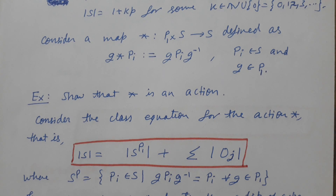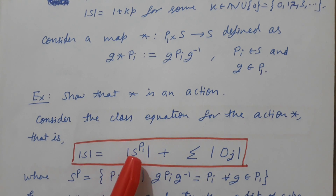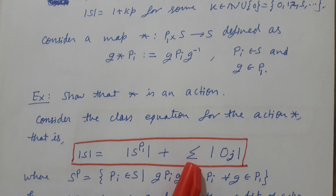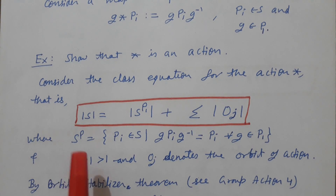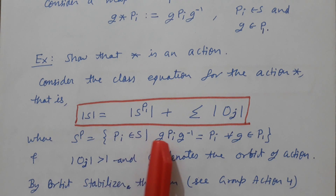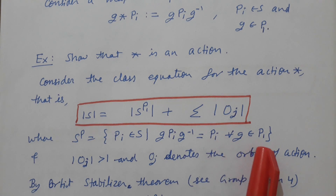Since P1 is acting on S, we can write the class equation of the action: |S| = |S_P| + Σ|O_j|, where the sum is over orbits with more than one element, and S_P is the fixed point set — those Pi in S for which g·Pi·g⁻¹ = Pi for all g in P1.